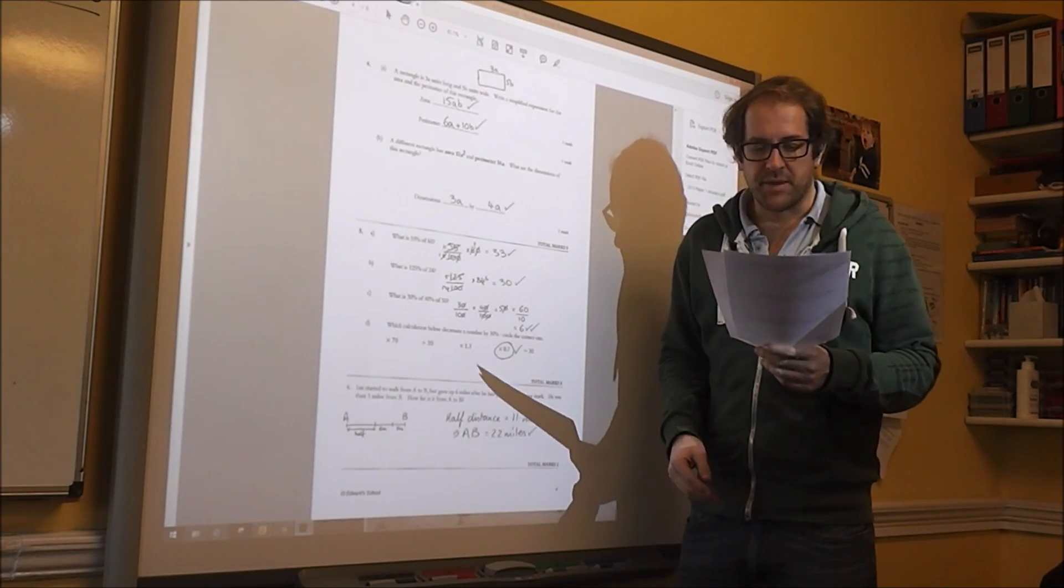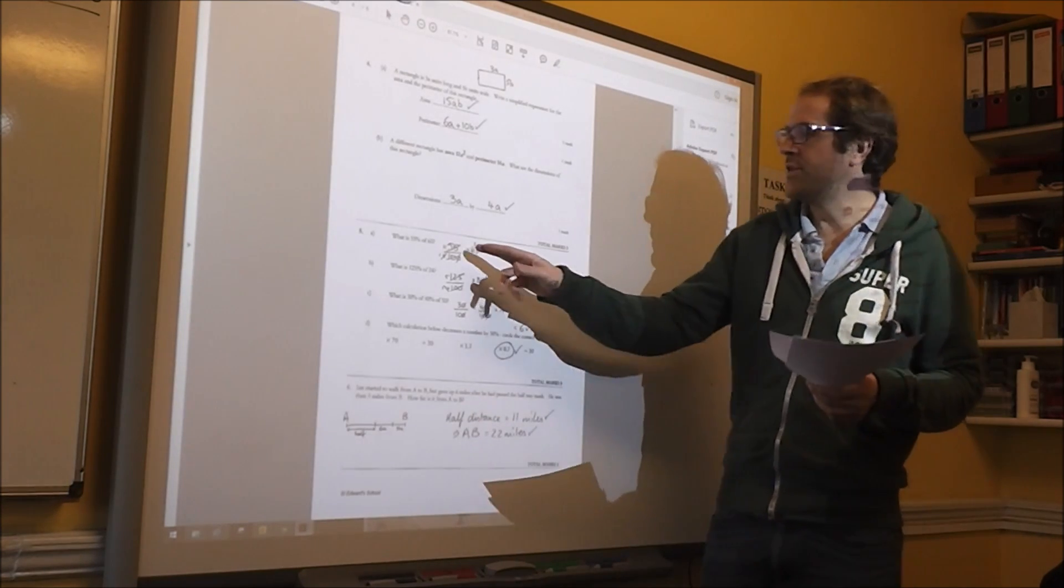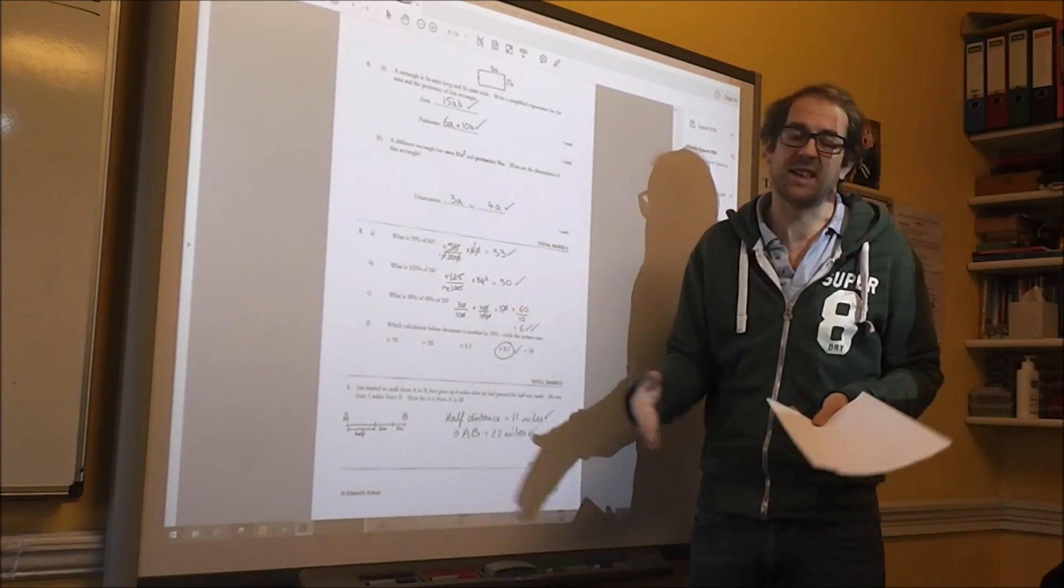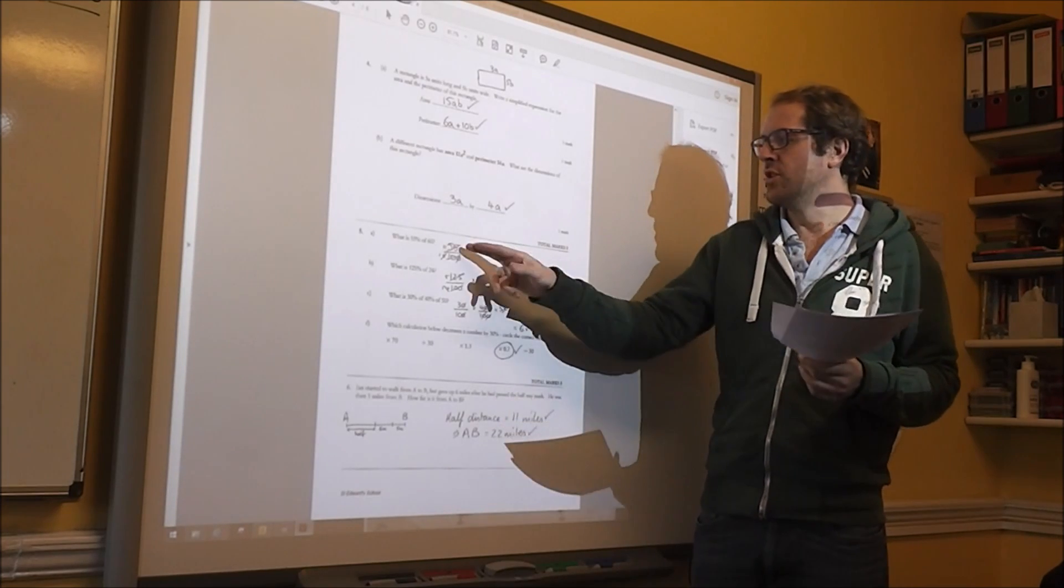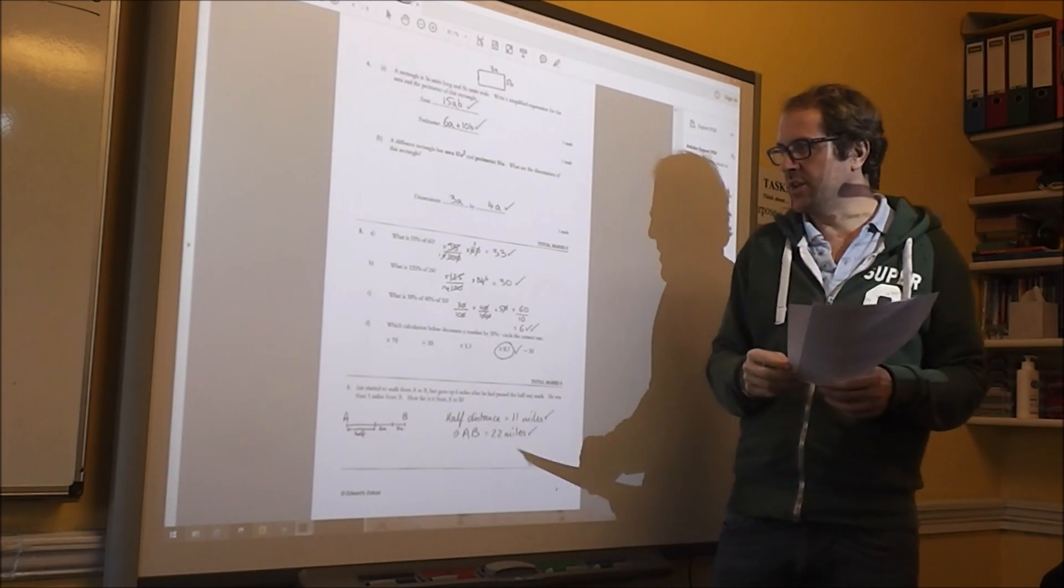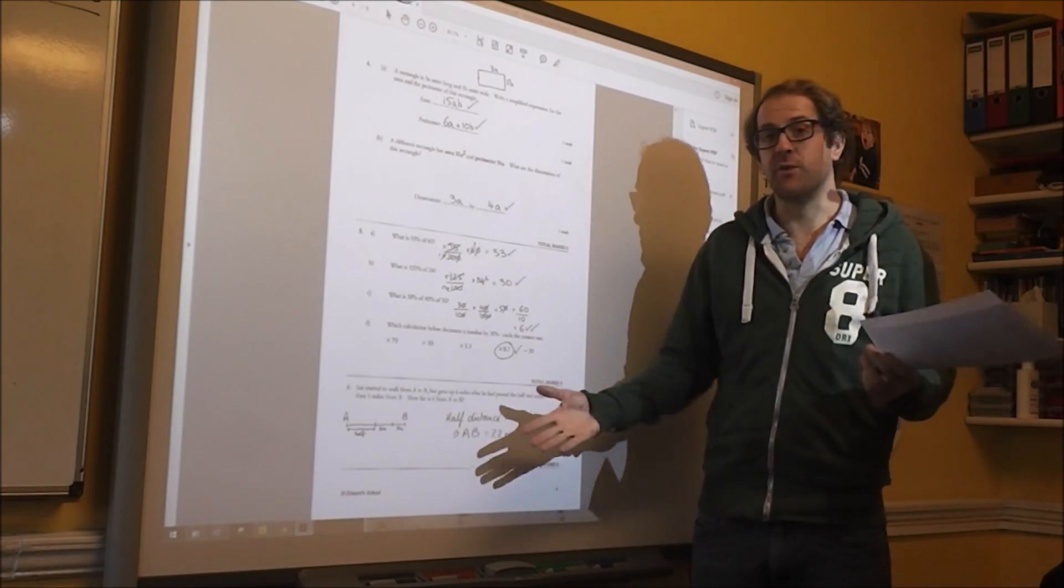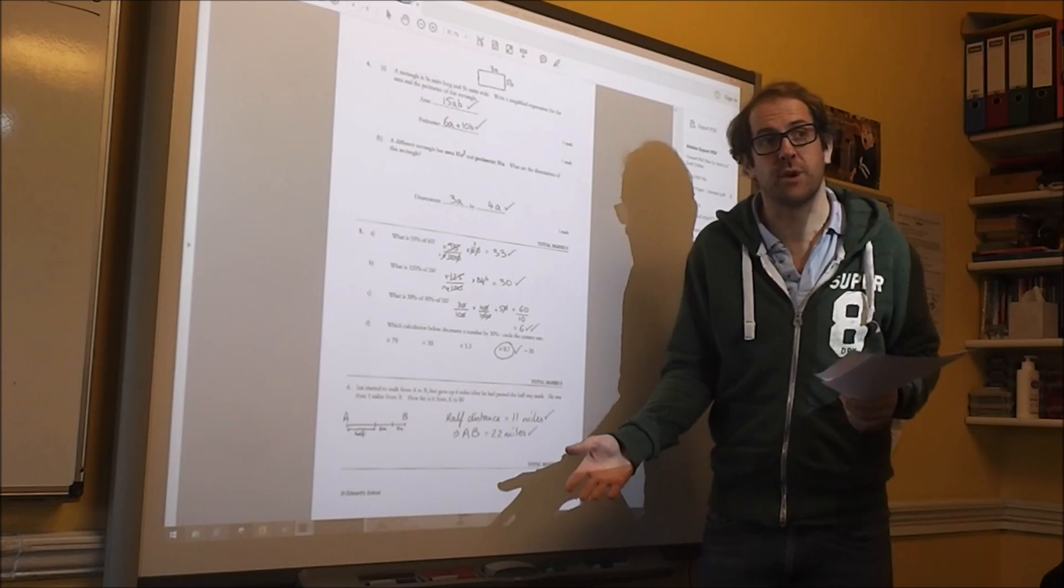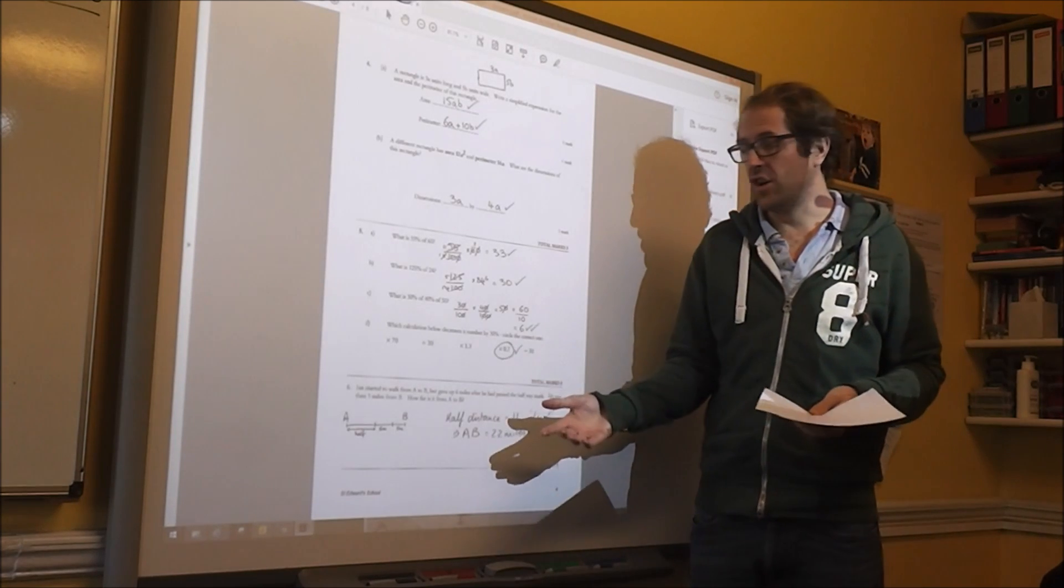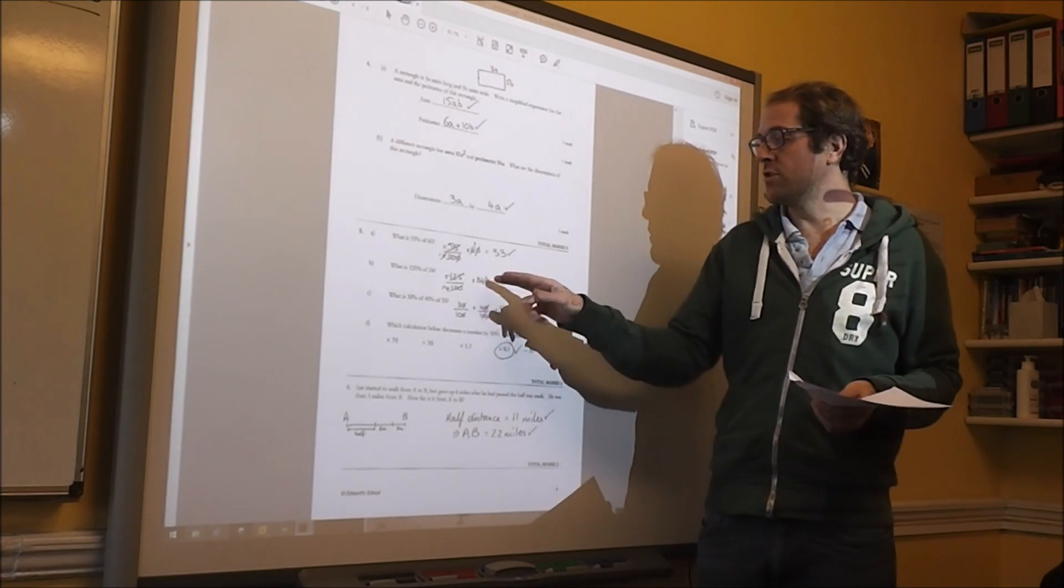Question 5 is about percentages of amounts. So 55%, either do it with 50% and 5% and add them together. Or 55 over 100 times 60, which is 33. A similar idea here with this. You can either work out 25% of 24, which is 6, and add it on. Or multiply it like this.